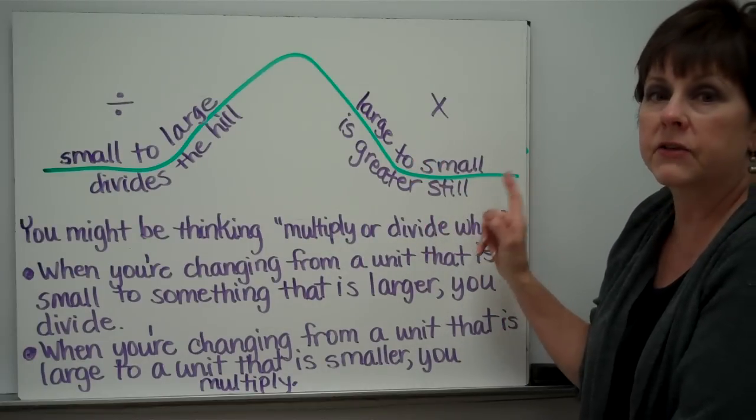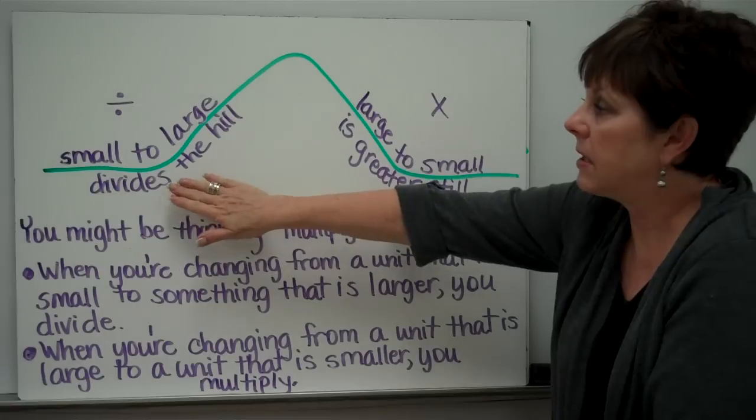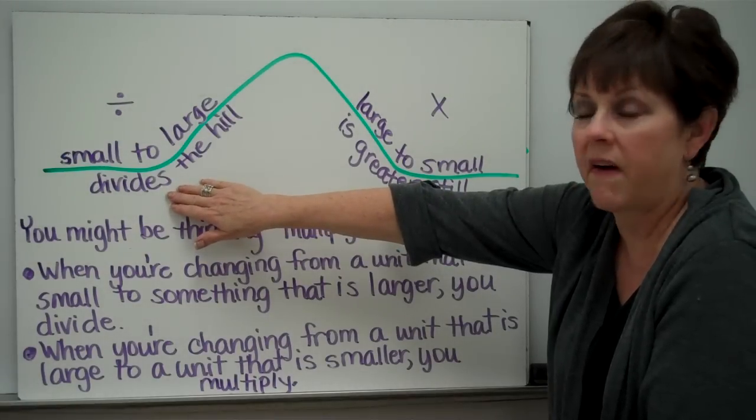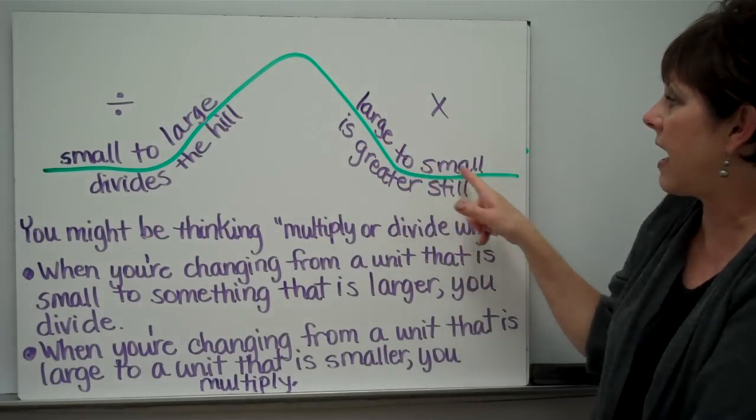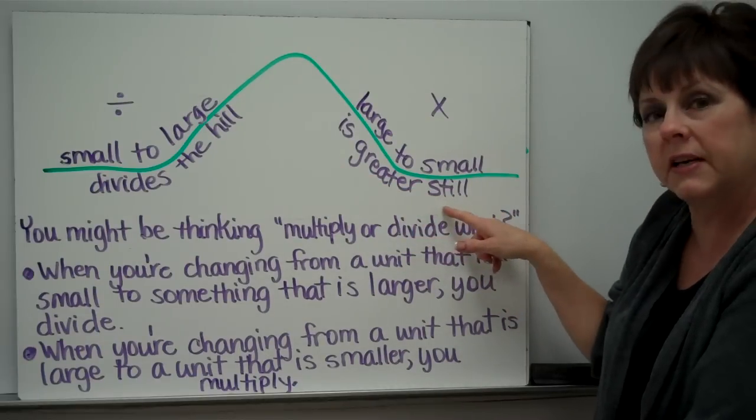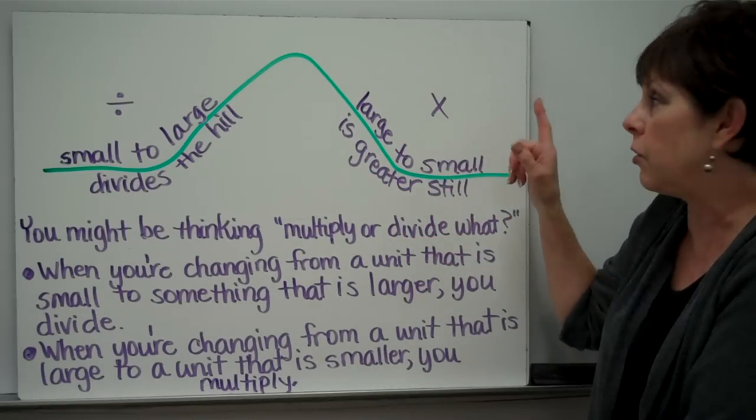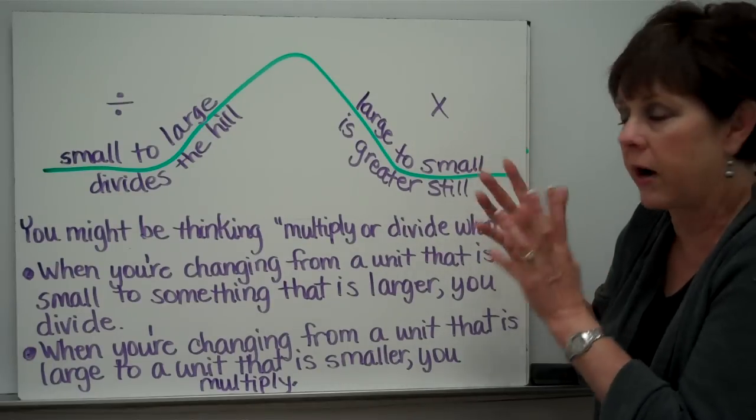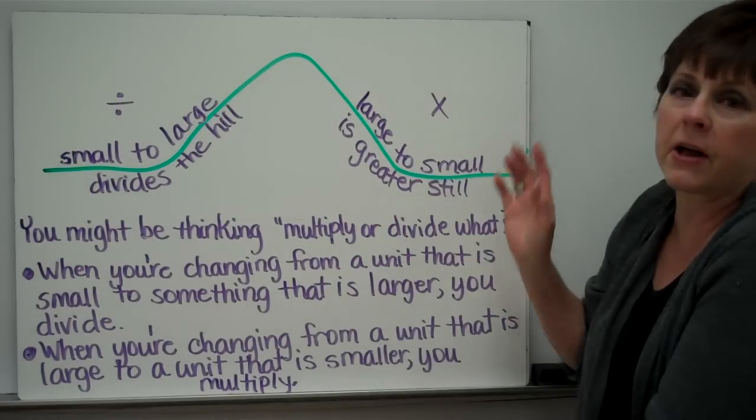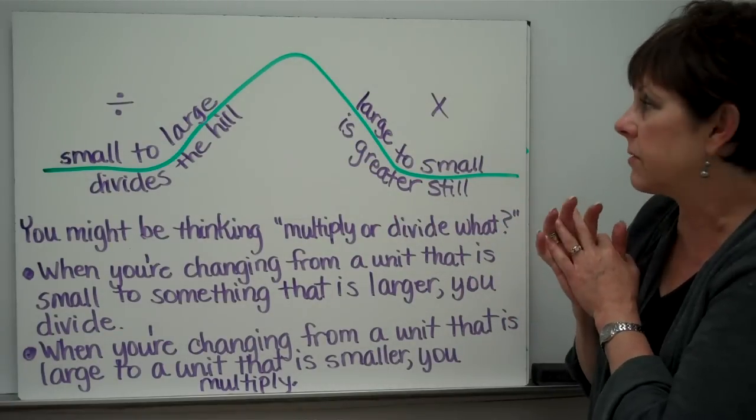And on the other side, large to small is greater still. Because this side uses the word divide, it's divide. Because this side says greater still, we know that you would multiply, because when you multiply, you make a number bigger or greater. There's only divide or multiply. There's no add or subtract.